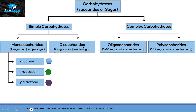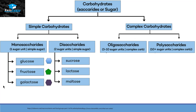Disaccharides, by the name, tell us that they have two sugar units attached with each other. For example, sucrose is a disaccharide made up of glucose and fructose. Similarly, lactose is made from glucose and galactose, and maltose is made up of two glucose units.